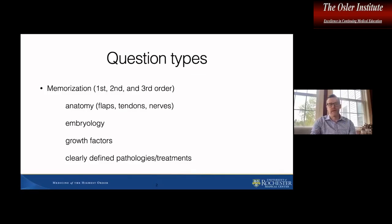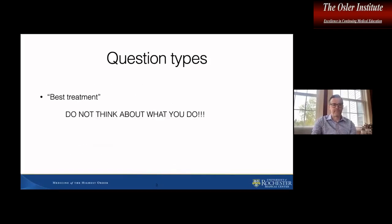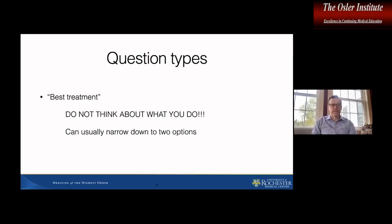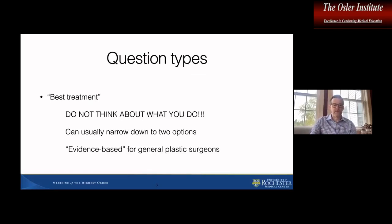If there's a clearly defined pathology or treatment for a particular condition — which is somewhat rare — there's also the best treatment question. The key mistake most people make is thinking about what they would do unless they are very clearly following evidence-based medicine. Do not think about what you've seen in training, because that is not always the right answer for the test. If you think about the best treatment for certain conditions, you can usually narrow it down to two options and get a 50-50. This is evidence-based for general plastic surgeons — try to outsmart the test writer, don't let them outsmart you.